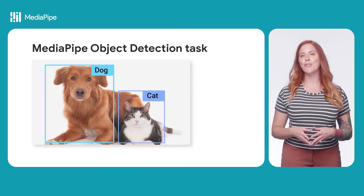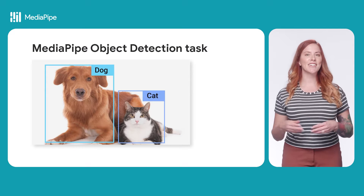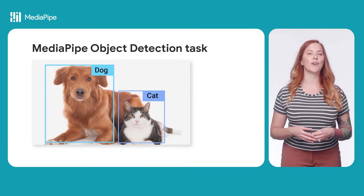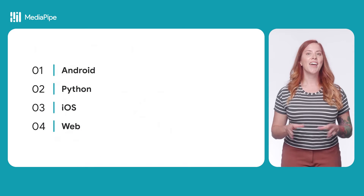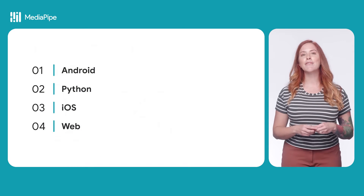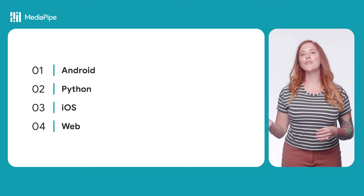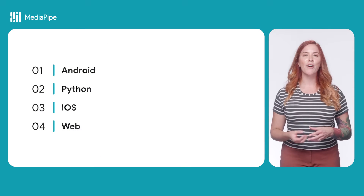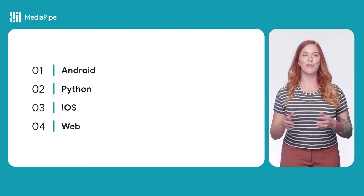The MediaPipe object detector task lets you detect the presence and location of multiple classes of objects within images or videos. For example, an object detector can locate dogs within an image. There are APIs available for Android, Python, iOS, and the web.